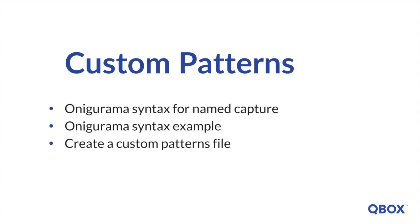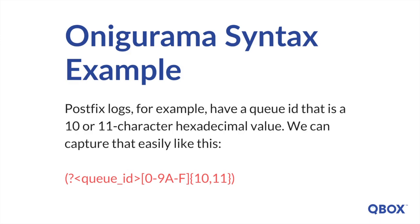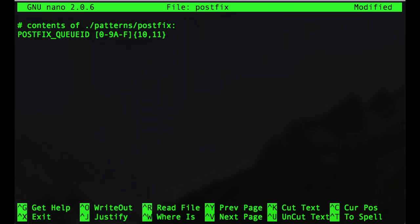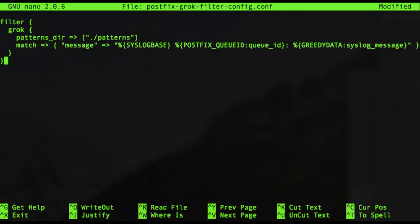Sometimes Logstash doesn't have the pattern we need. For this, we have a few options. First, we can use the Onaguruma syntax for named capture, which will let you match a piece of text and save it as a field. Postfix logs, for example, have a QID that is a 10 or 11 character hexadecimal value — we can capture that easily like this. To create a custom patterns file, create a directory called patterns with a file in it — make sure to give it a meaningful name. In the file, write the pattern you need as the pattern name, a space, then the regex for that pattern. Let's use the Postfix QID example, then save this to your pattern file. Now let's save the Postfix log into another file. Then use the patterns directory setting in this plugin to tell Logstash where your custom patterns directory is.